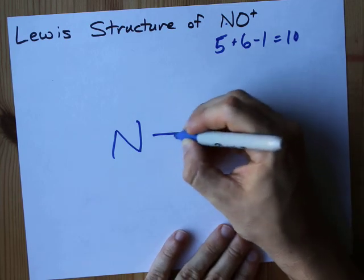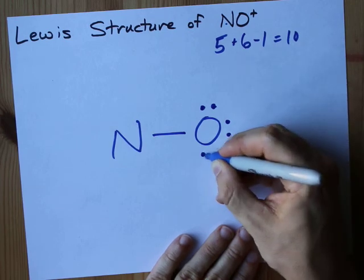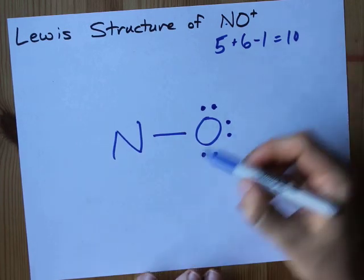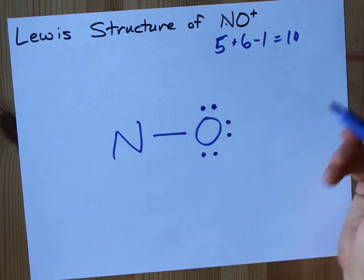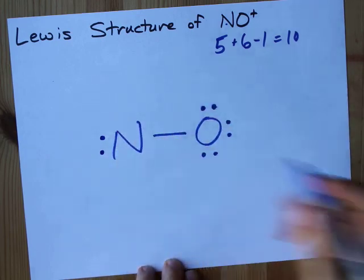That's 1, 2 electrons for this bond, 3, 4, 5, 6, 7, 8. And I need 10 total, but I've already filled the octet on oxygen, so I need to take those extra 2 electrons and put them on the N.